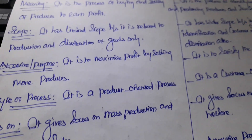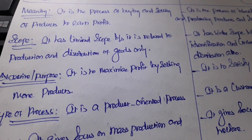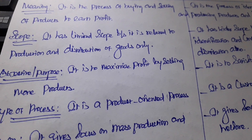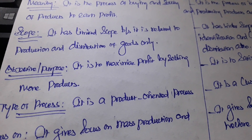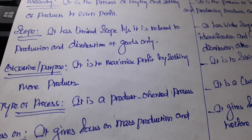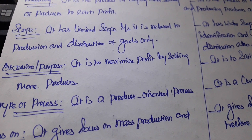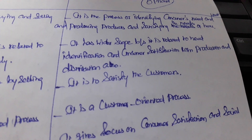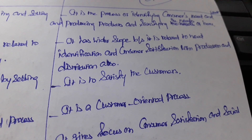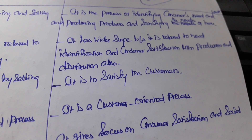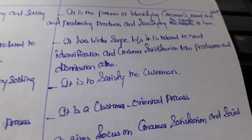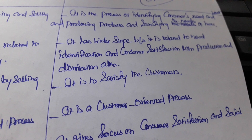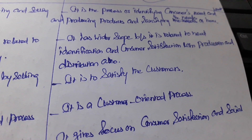The next difference is scope. The old concept of marketing has limited scope because it is related to production and distribution of goods only. The new concept of marketing has wider scope because it is related to need identification, consumer satisfaction, as well as production and distribution of goods.